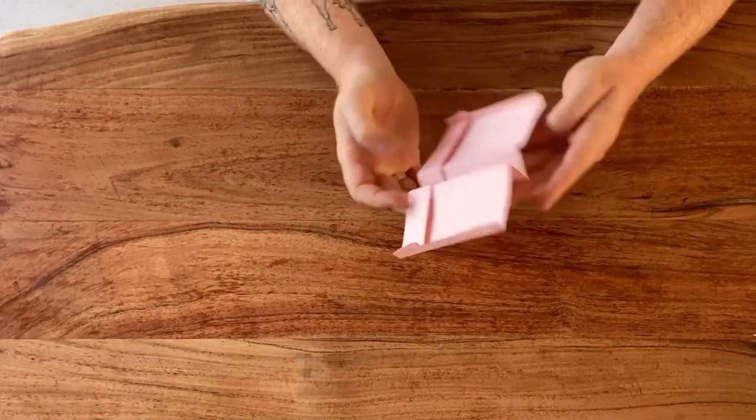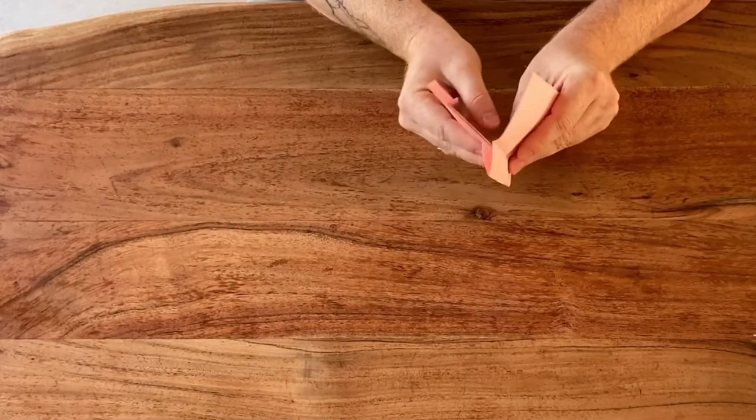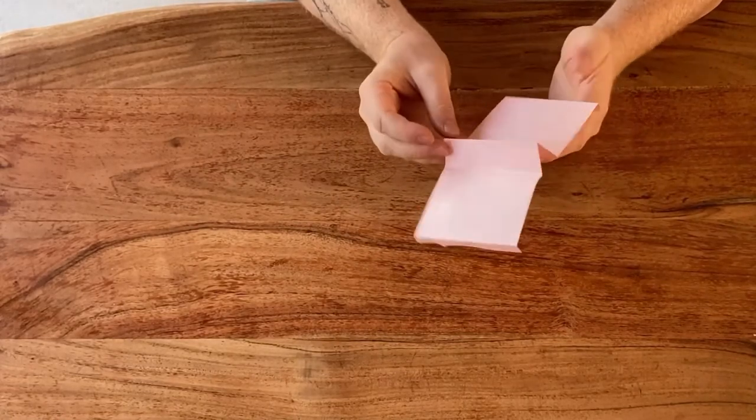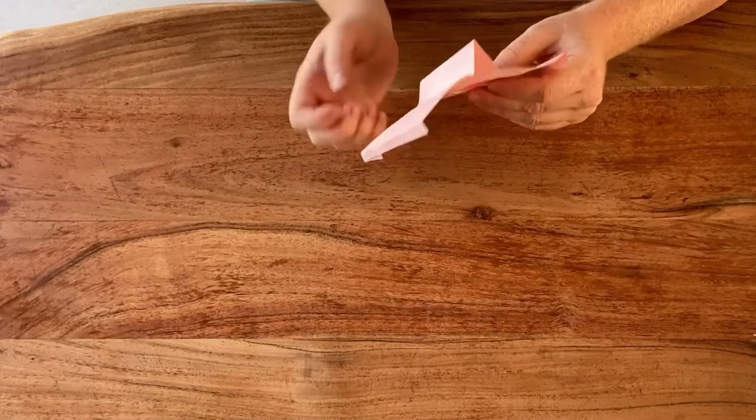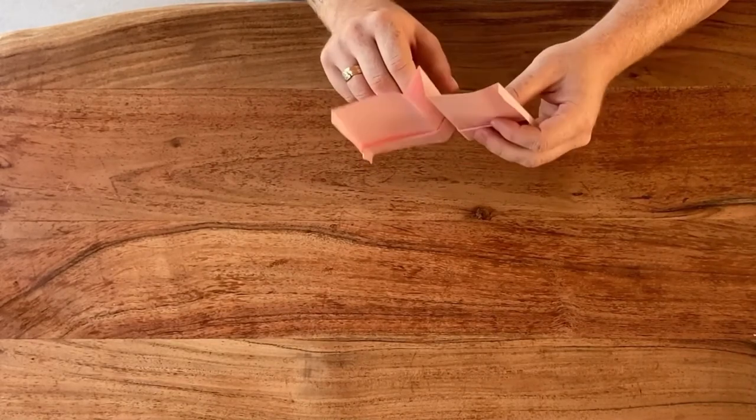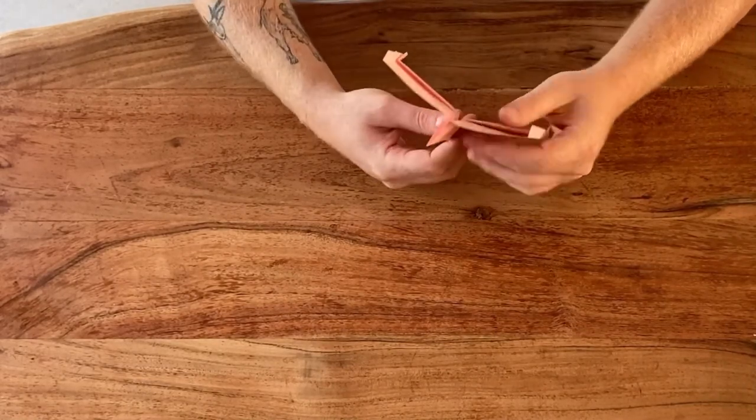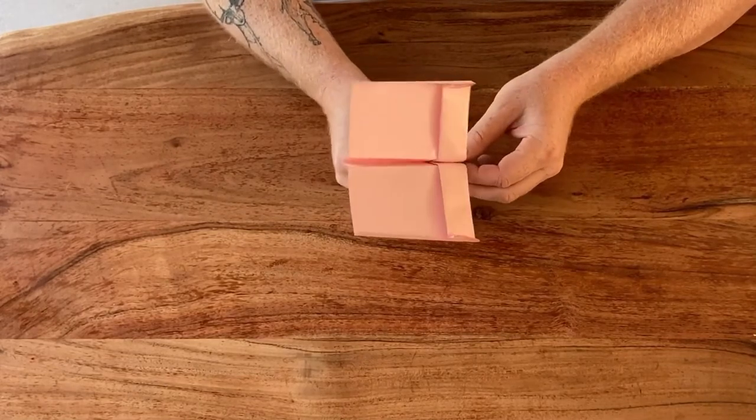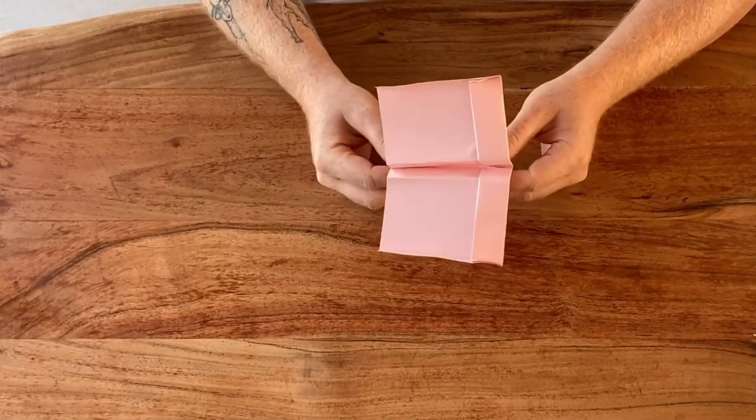And then you want to set the wing angle so that when you release it it's level or slightly up. So something like this is perfect. And that's it. So really good plane. Usually you don't need up elevator at all. It's just a great flyer for how simple it is to make.